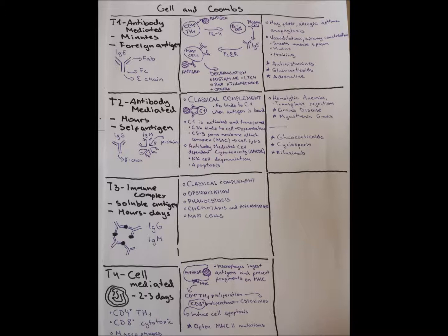Type 2 antibody-mediated hypersensitivity examples include hemolytic anemia and transplant rejection, where antibodies react to foreign antigens on our cells or foreign human cells. More interesting examples are Graves' disease and Myasthenia Gravis, where antibodies bind to receptors and interfere with signal transduction, causing very specific diseases. We use glucocorticoids, immunosuppressants like cyclosporine, and rituximab, which acts on B-cells and prevents them from making so many antibodies.